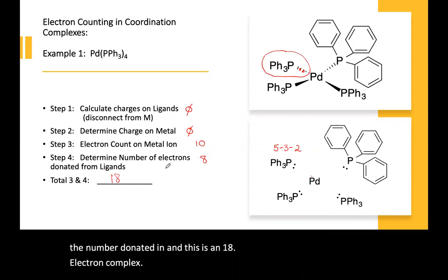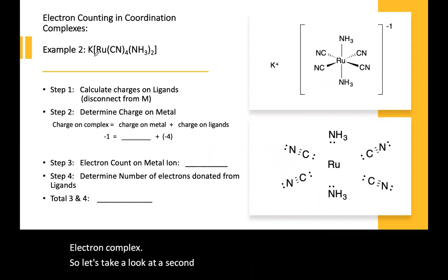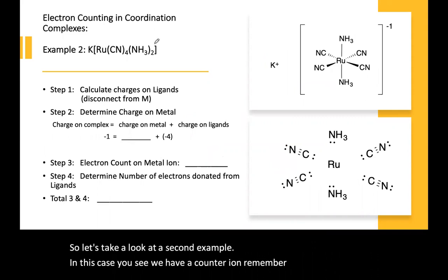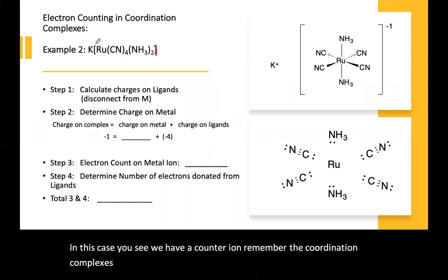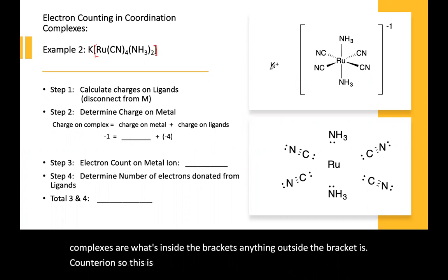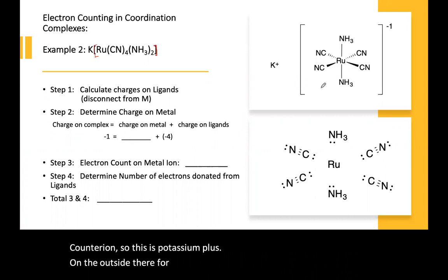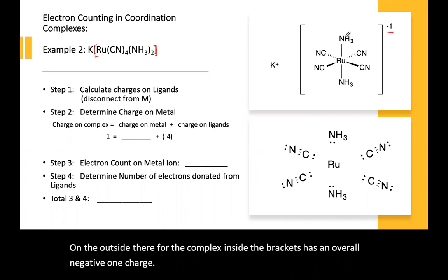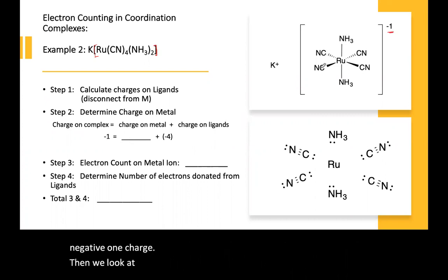Let's take a look at a second example. In this case you can see we have a counter ion. Remember, the coordination complex is what's inside the brackets — anything outside the bracket is a counter ion. So this is potassium plus on the outside; therefore the complex inside the brackets has an overall negative one charge. Inside we have four nitriles and two ammonia ligands.